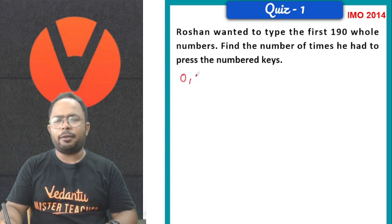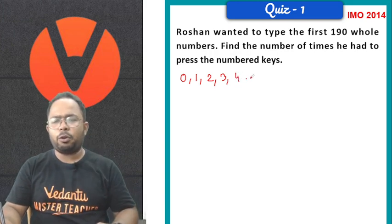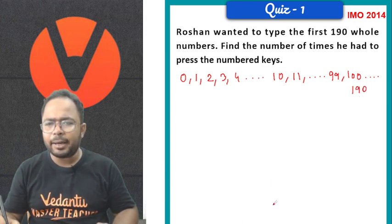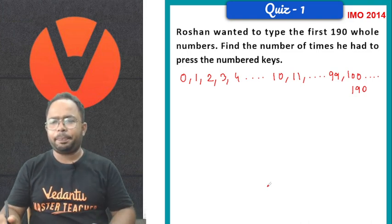So, Roshan wanted to type the first 190 whole numbers. What will he do? 0 will write, 1 will write, 2 will write, 3 will write. Keyboard on the keyboard, pressing on the keyboard. This way, 10 will write, 11, dot dot dot. This way, 99. Then 100. Ultimately, 190 will write.